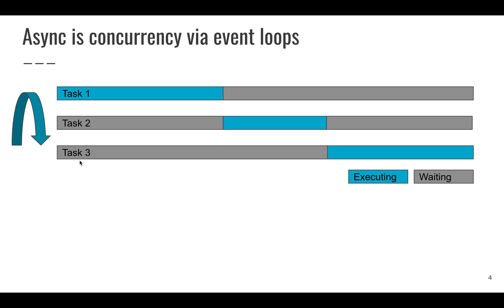Let's take an event loop that has three tasks and start running it. Task one runs until it needs to do some IO, at which point it yields control back to the event loop. The event loop iterates through the tasks, runs task two until it needs IO, and so on with task three. This keeps the CPU busy whilst these tasks await IO, rather than simply blocking.